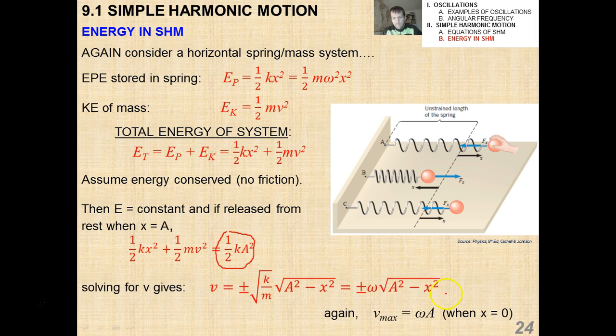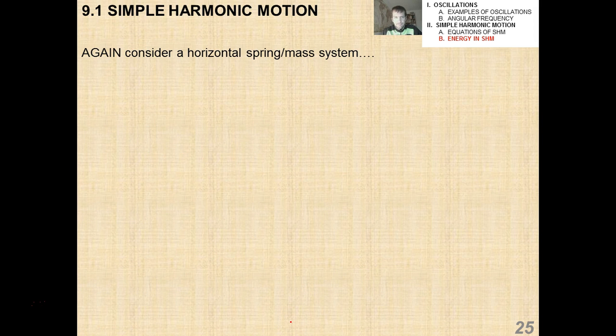So if I solve for v, then I get this equation that I actually alluded to in the last video with that example, when I said I'm going to explain that particular equation in the next video. Well, here it is, and this is actually given to you in the data booklet. And again, don't forget that the maximum velocity of this oscillating mass is omega times a. And that maximum velocity occurs when its displacement is zero, as usual. So you're not going to have to derive this equation, but you want to make sure that you know how to use it.